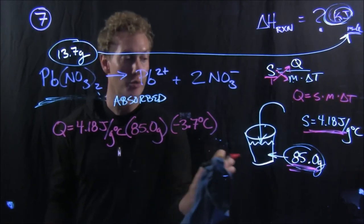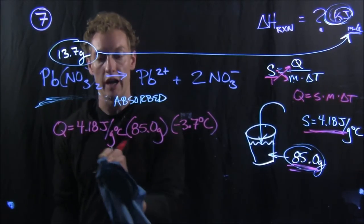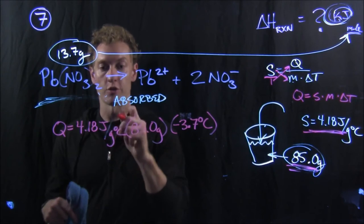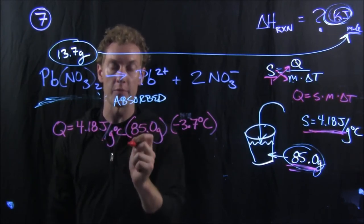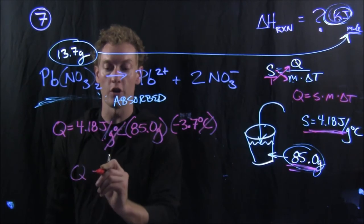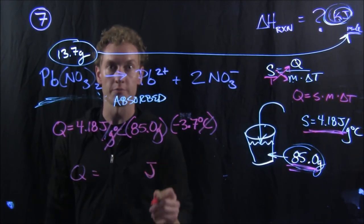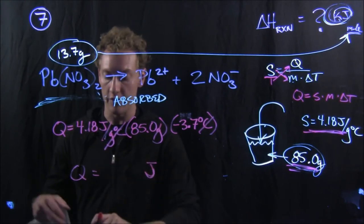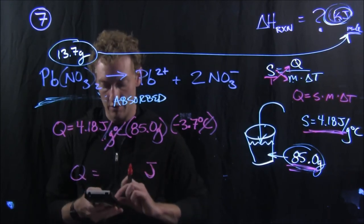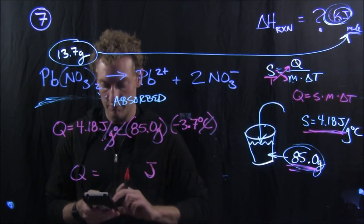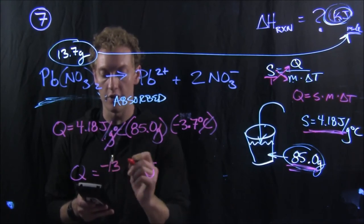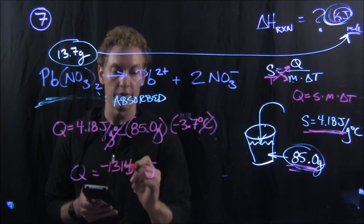I included the labels there so we can see what's the label on Q going to be. It's written as joules per gram degree Celsius. So grams on the bottom of this fraction, grams divides away, degrees Celsius divides away. So the unit on Q is going to be joules. 4.18 times 85 times negative 3.7, we get negative 1,315 joules.